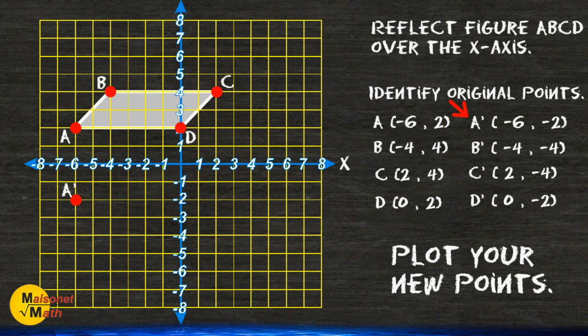A is now located at negative 6, negative 2, B is at negative 4, negative 4, C is at positive 2, negative 4, and D is at 0, negative 2.